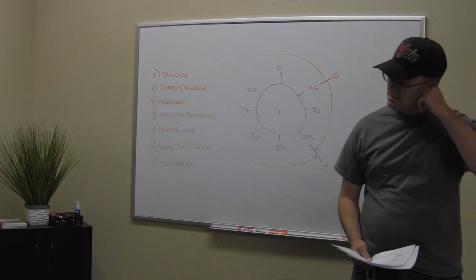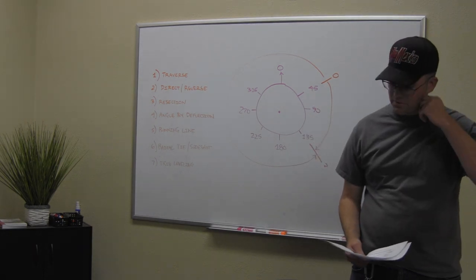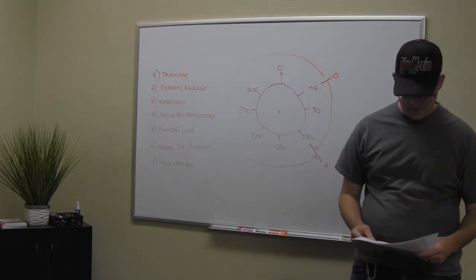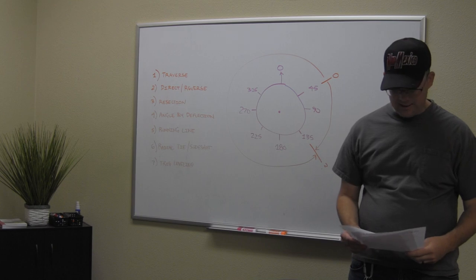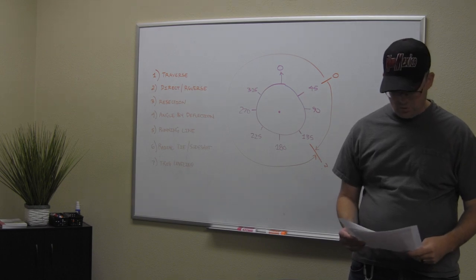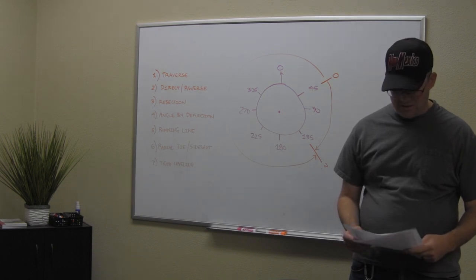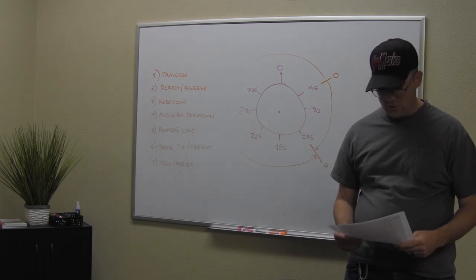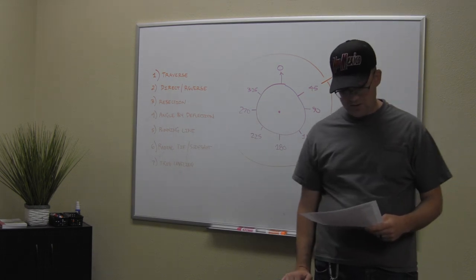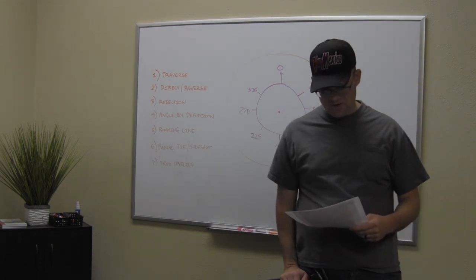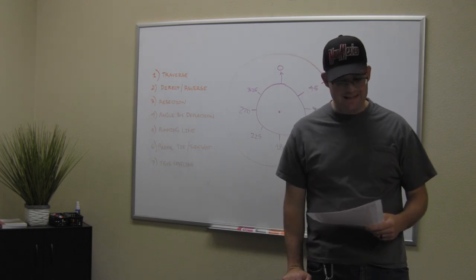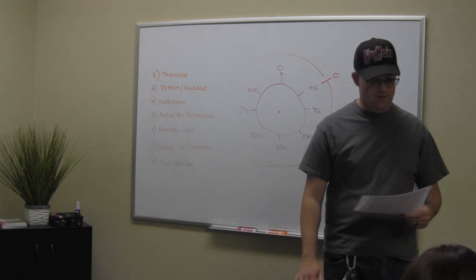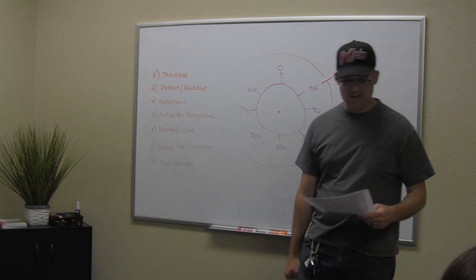When you take the CST or the LSIT, all the questions are worth the same. All right, let's go through these. Question one: which of the following is an example of a controlling call in the land description? The answer is C — along the center line of Landon's Creek.